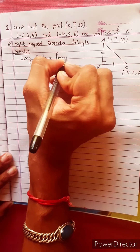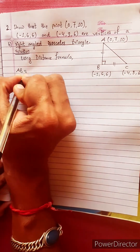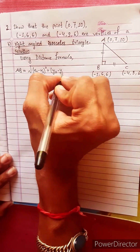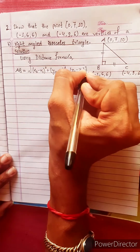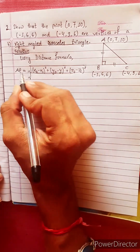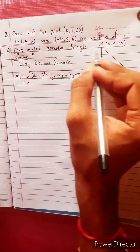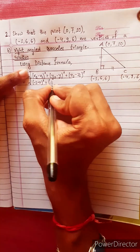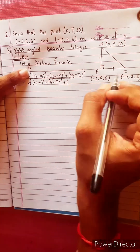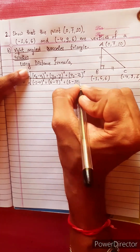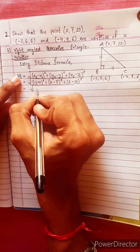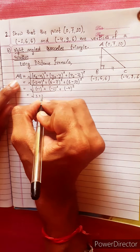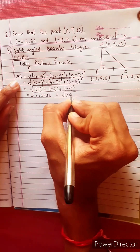Using the distance formula, suppose AB equals the length AB. AB = √[(x2 - x1)² + (y2 - y1)² + (z2 - z1)²]. Here x1 = 0, x2 = -1, y1 = 7, y2 = 6, z1 = 10, z2 = 6. So AB = √[(-1 - 0)² + (6 - 7)² + (6 - 10)²] = √[1 + 1 + 16] = √18 = 3√2.